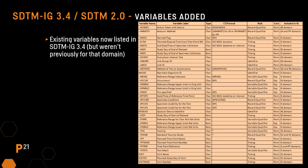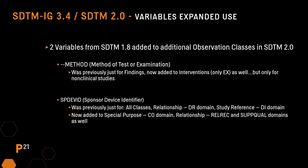There are also a number of existing SDTM variables that have been added to certain domains in the implementation guide. This means these variables previously had a core of model permissible, but now are upgraded to permissible, expected, or required since they've been listed in the IG. The usage for two variables has been expanded: the method variable was previously only in findings domains but now can be used in the EX domain for non-clinical studies. SP DevID has been expanded for use in CO, RELREC, and the subqual domains.